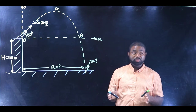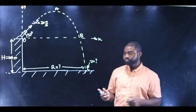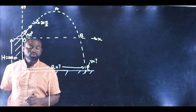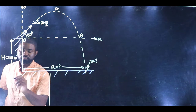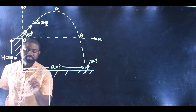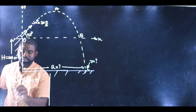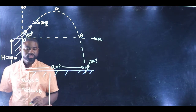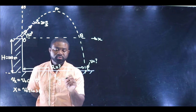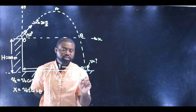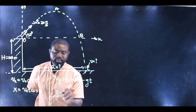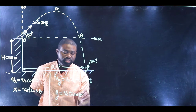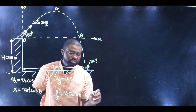Remember that in any projectile motion problem, it can be solved using just a set of four equations. In the x direction you have two equations: vx equals v-naught cosine theta, and x equals v-naught cosine theta times t. In the y direction you have: vy equals v-naught sine theta minus gt, and y equals v-naught t sine theta minus one-half gt squared.